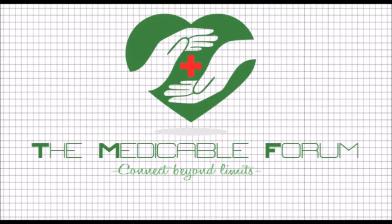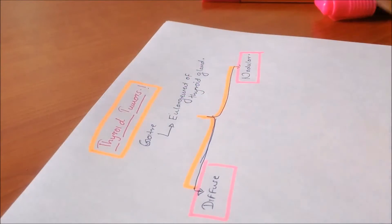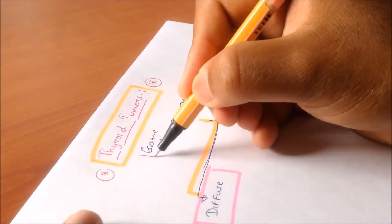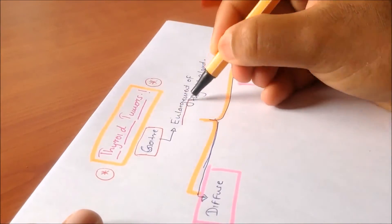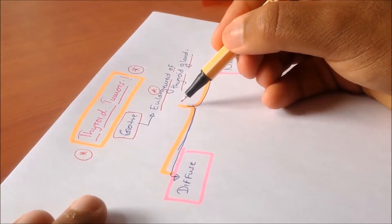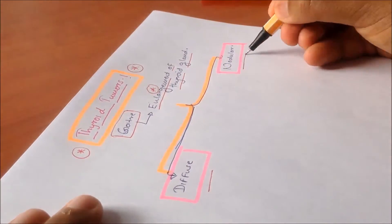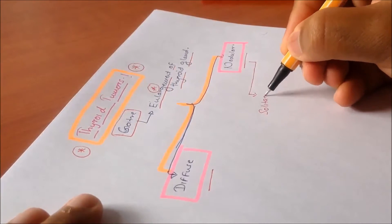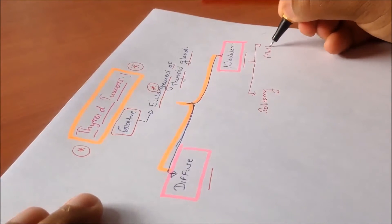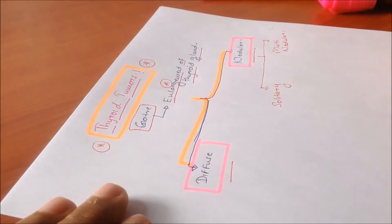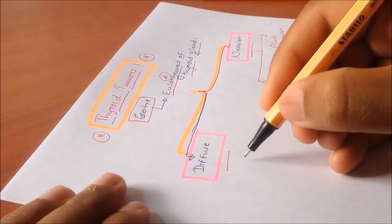Today's topic is thyroid tumors. Before starting, it's useful to get acquainted with the definition of goiter. Goiter is basically an enlargement of the thyroid gland. This goiter can either be a diffuse goiter or a nodular goiter. In cases of nodular goiter, it can be either a solitary nodule or it can be multinodular.